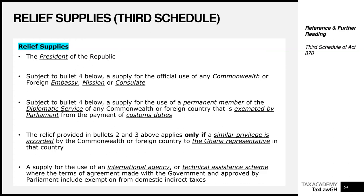The condition for diplomatic relief is that this applies only if a similar privilege is accorded by that country to the Ghanaian representative in that country. For example, if we are dealing with Germany, Germany must also accord a similar or equivalent privilege to the Ghanaian diplomatic person there, relieving them from domestic sales taxes or VAT. We are trying to ensure equivalence — if Ghana gives a relief, the other country should as far as possible also provide similar relief treatment.